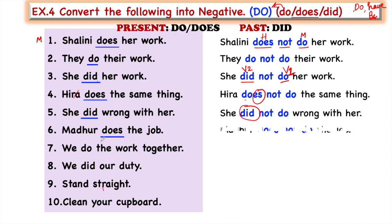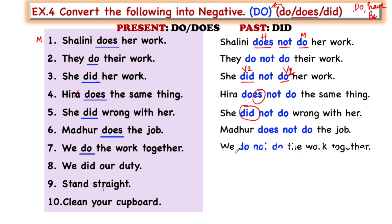'Madhur does the job' → 'Madhur does not do the job.' The concept is now clear, and on the same pattern we can do the remaining sentences. If you have any confusion, you can re-watch this video and things will become clearer. 'We do the work together' → 'We do not do the work together.' 'We did our duty' → 'We did not do our duty.'